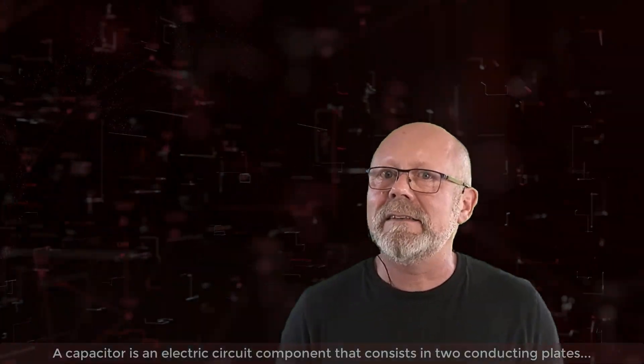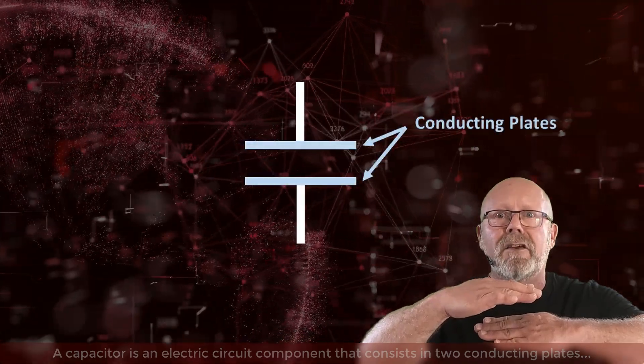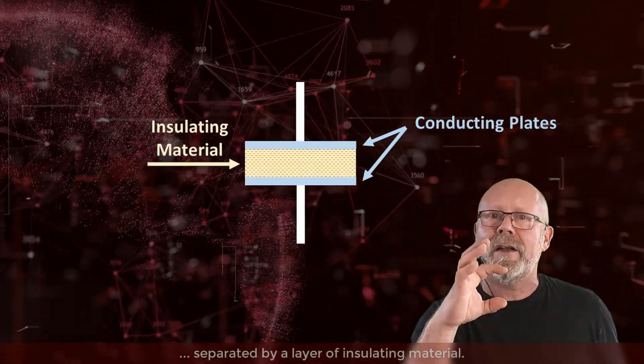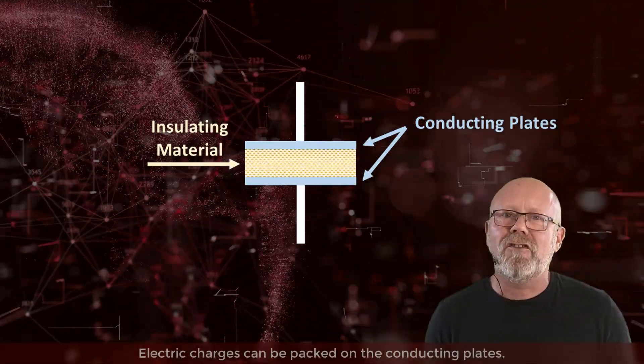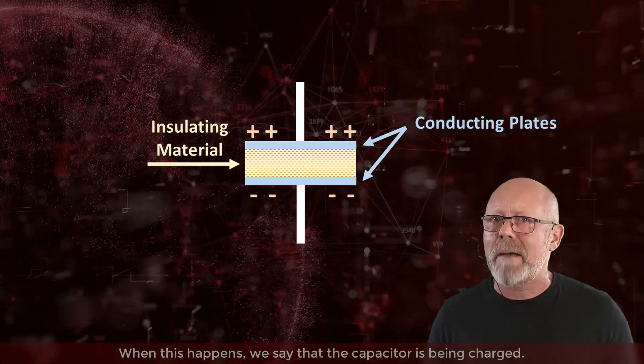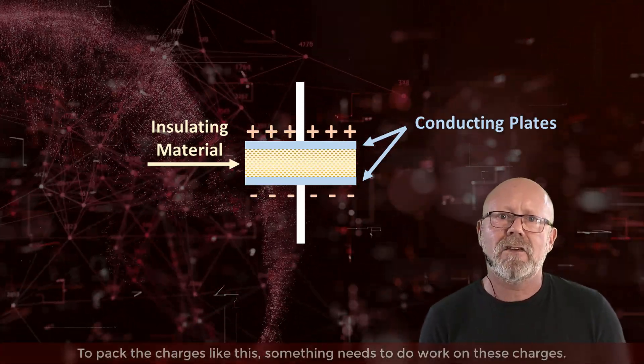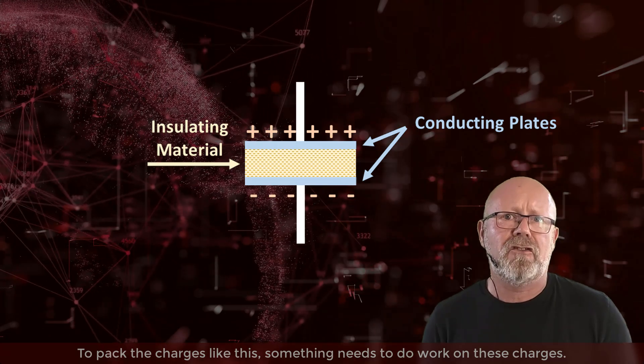A capacitor is an electric circuit component that consists of two conducting plates separated by a layer of insulating material. Electric charges can be packed on the conducting plates. When this happens, we say that the capacitor is being charged. To pack the charges like this, something needs to do work on these charges.